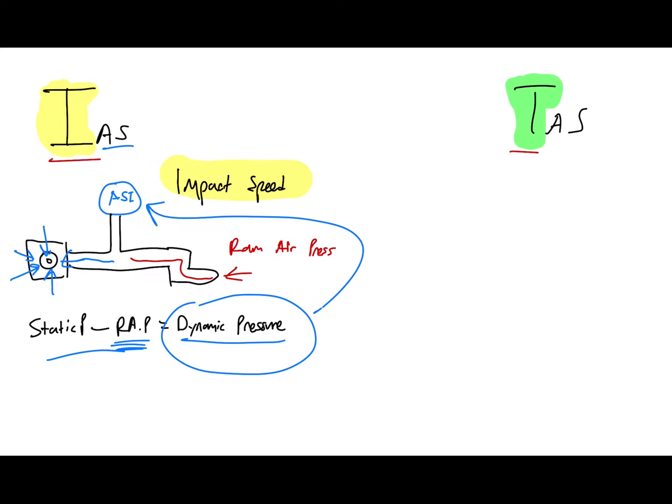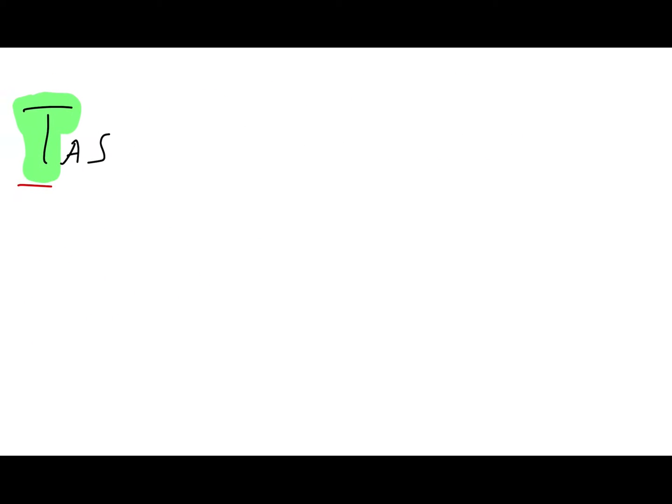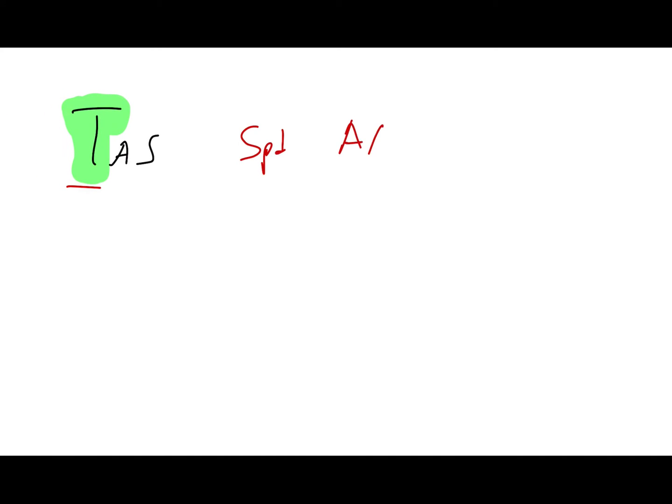True airspeed is basically the speed of the aircraft relative to the air. You can think of it as the speed you're going past the clouds, relative to the clouds — because clouds are huge masses of water vapor sitting in the air — without taking wind into account. True airspeed is simply the speed of the aircraft relative to the mass of air.